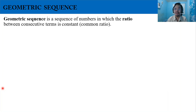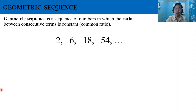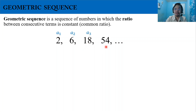Let us consider this sequence: 2, 6, 18, 54. Here, 2 is the first term, 6 is the second term, 18 is the third term, and 54 is the fourth term.